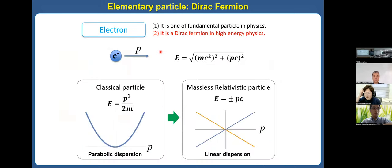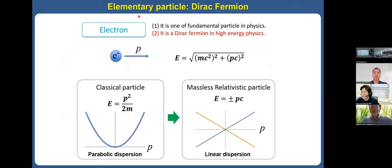Let me briefly introduce the importance of the Dirac semimetal from an elementary viewpoint. The electron — the main player in condensed matter physics — is actually one of the fundamental particles in physics. It is actually a Dirac fermion in high-energy physics. But usually it is a classical particle having a parabolic dispersion. However, if the momentum increases, it should be a relativistic particle having a linear dispersion.